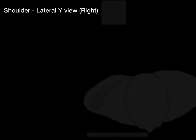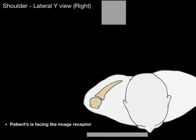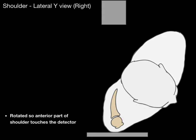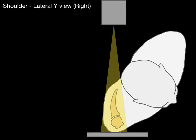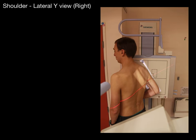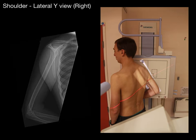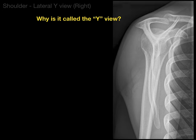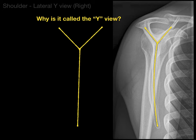Now let's do the lateral Y view. The patient faces the image receptor and is rotated so the anterior part of the shoulder touches the detector. The picture is then taken. Here you can see the patient has their elbow flexed with the palm of their hand touching their belly. This view is called the Y view because the structures visible form a shape that looks like the letter Y.